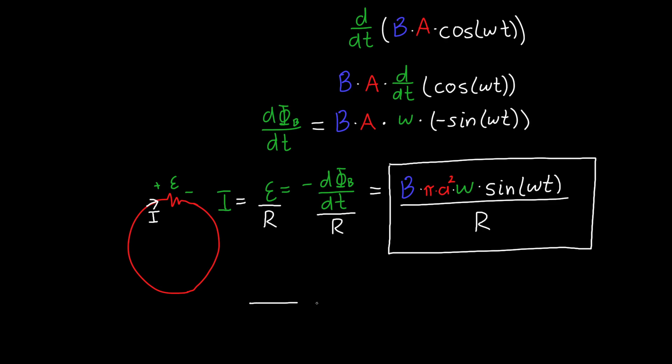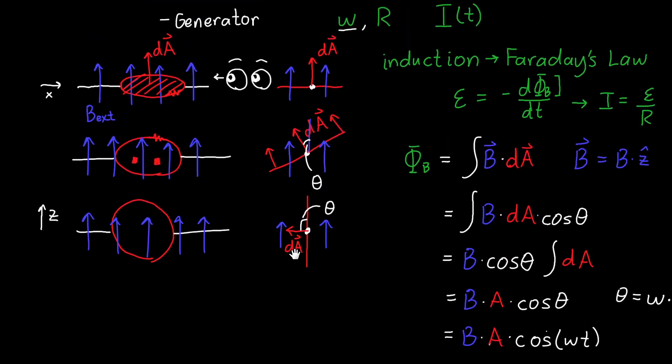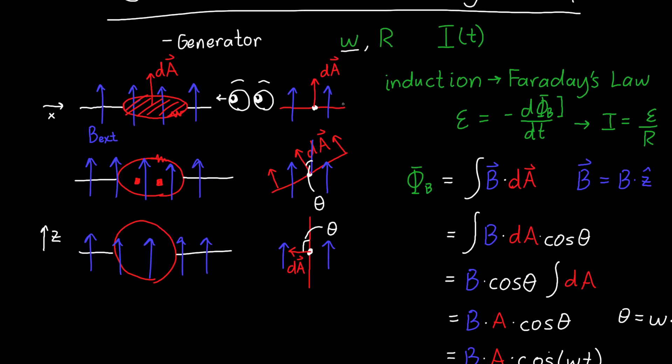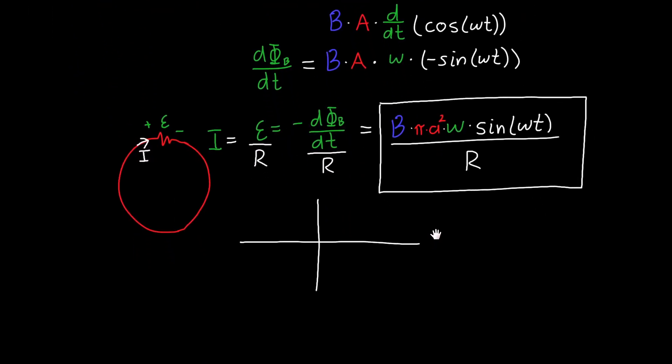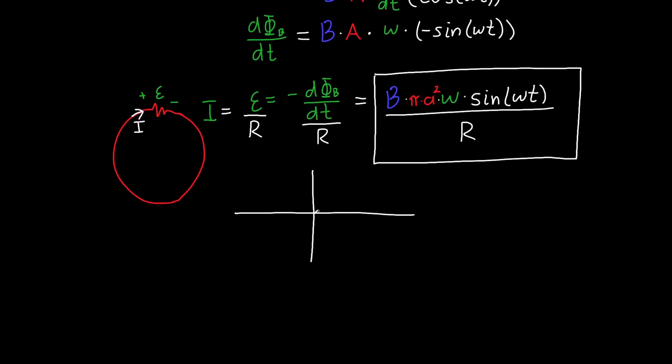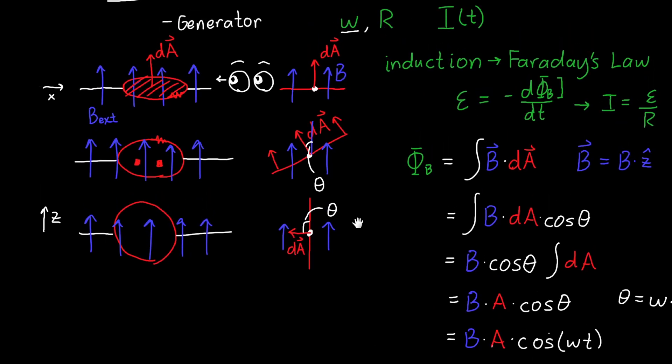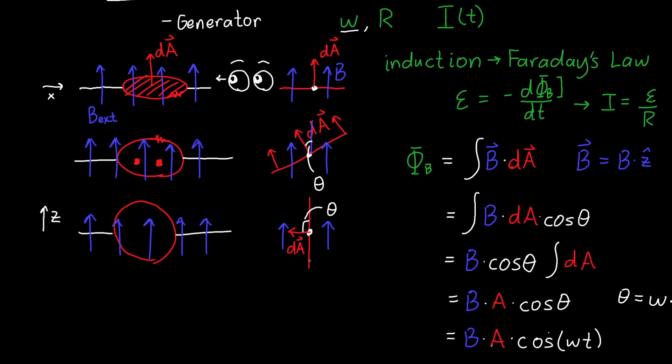So this says initially when the loop is perpendicular to the magnetic field, so dA and B are pointing in the same direction, initially the change in magnetic flux is close to zero. And so we have very low induced EMF. But then as our loop starts to rotate it gets higher and higher and higher.